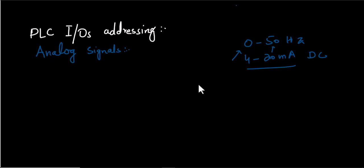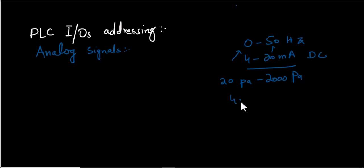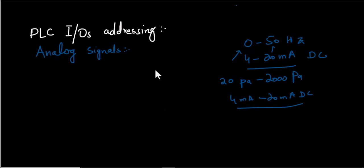Similarly, if we have a pressure sensor interfaced with the PLC and the range of the pressure sensor is from 20 Pascal to 2000 Pascal, to represent these values the 4 milliampere to 20 milliampere DC signal is required. So we have to address the analog signals in our PLC — for example, a PLC input channel with a 20 to 2000 Pascal pressure sensor interfaced to it.